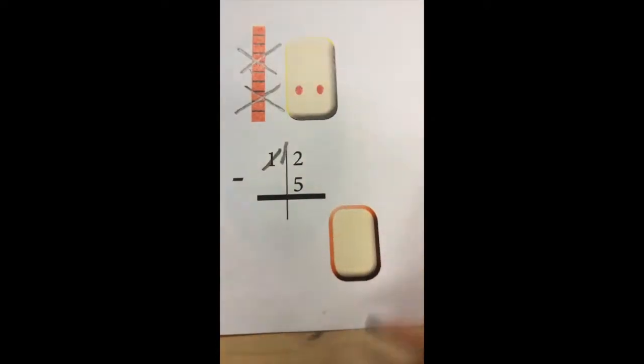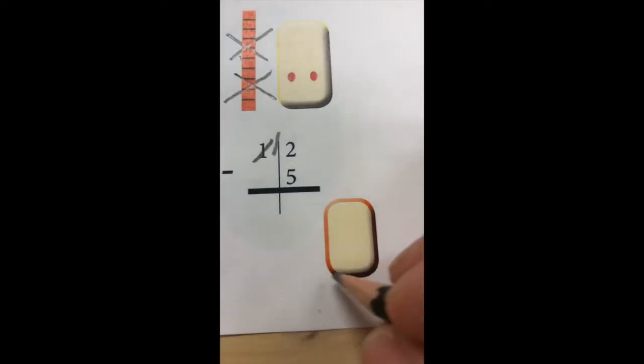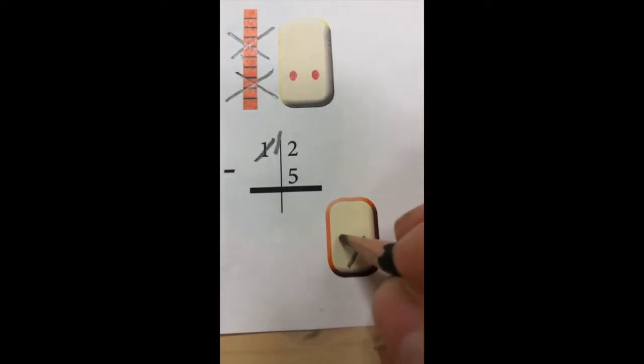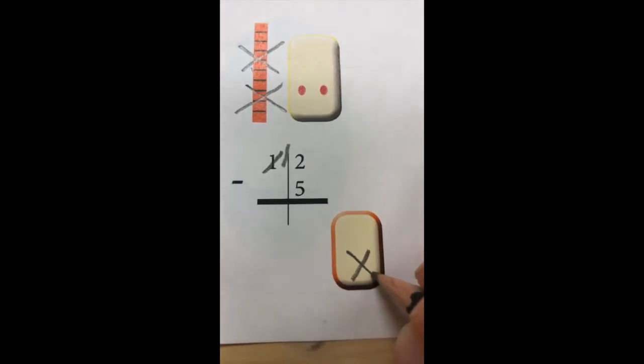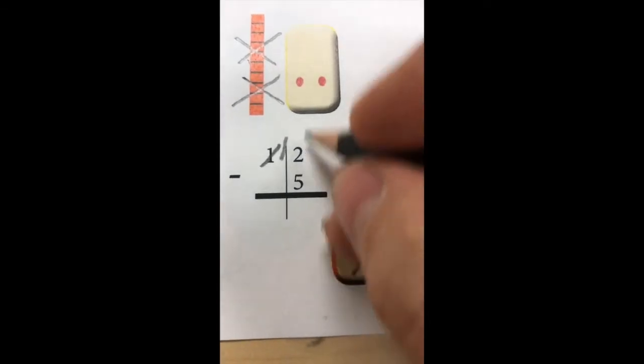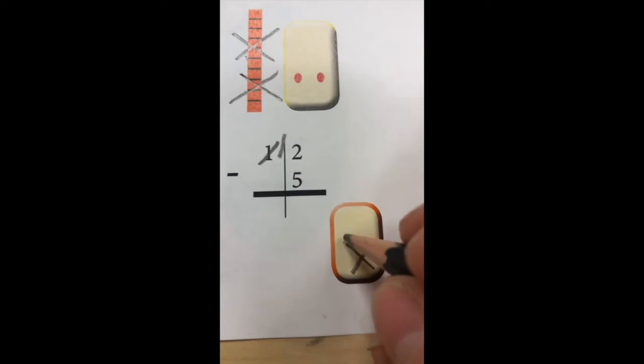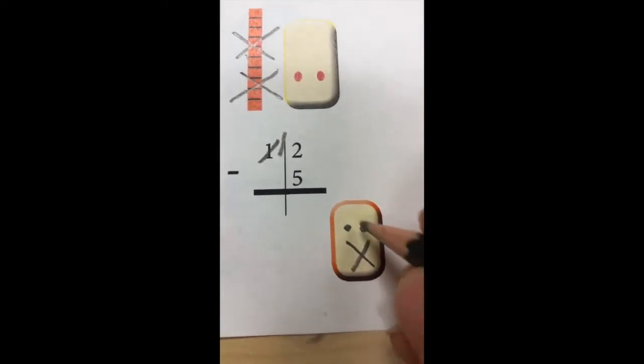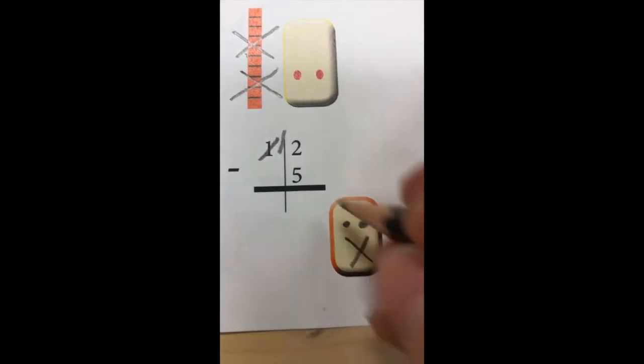What's left? 5. I'm going to make a model down here of that 5 that's left along with the two additional. So I've just created a diagram of the subtraction problem's answer. So the difference here is 7.